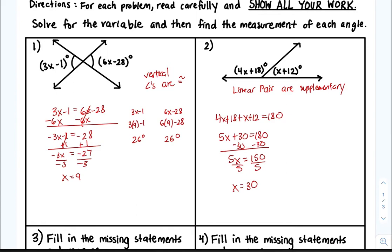Now plug x in to find the angle measurements. We have 4x plus 18 and x plus 12. So 4 times 30 plus 18 gives 138 degrees, and 30 plus 12 gives 42 degrees. That makes sense because linear pairs are supplementary — 138 plus 42 is 180 degrees.